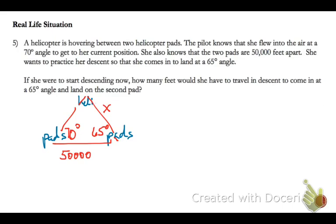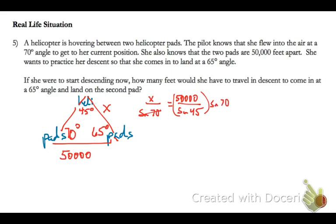Find the third angle: 180 minus 70 minus 65 gives 45 degrees. Set up the law of sines equation: x over the sine of 70 equals 50,000 over the sine of 45. Multiply both sides by the sine of 70: 50,000 divided by the sine of 45, times the sine of 70. The helicopter will be flying about 66,446 feet.